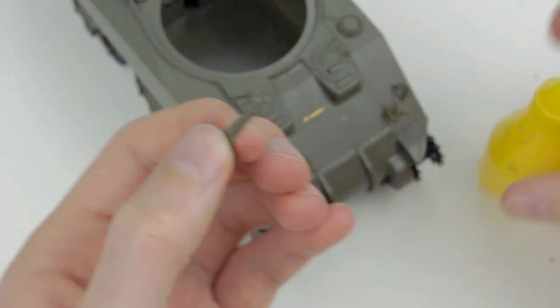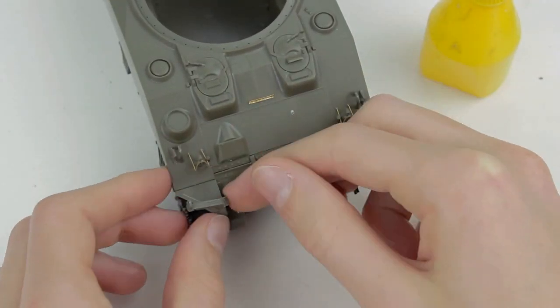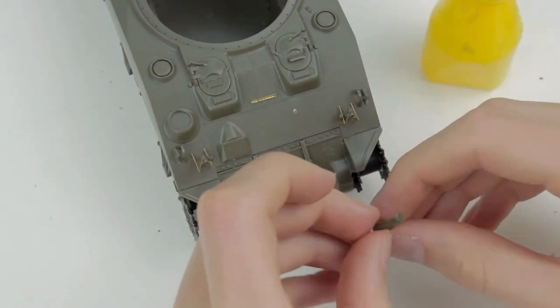Some of these parts I'm adding now are only for the painting and marking scheme A. Again, make sure that you check the instructions carefully when you are building this model.